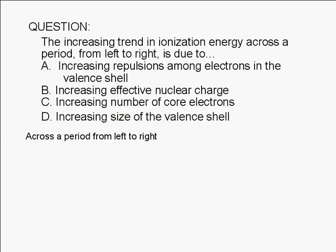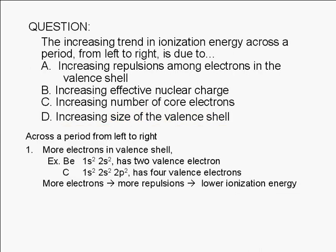Across a period from left to right, the trend is more electrons in the valence shell. For example, in period II, beryllium, which belongs to group IIA, has two valence electrons. On the other hand, carbon, which is in group IVA, has four valence electrons.